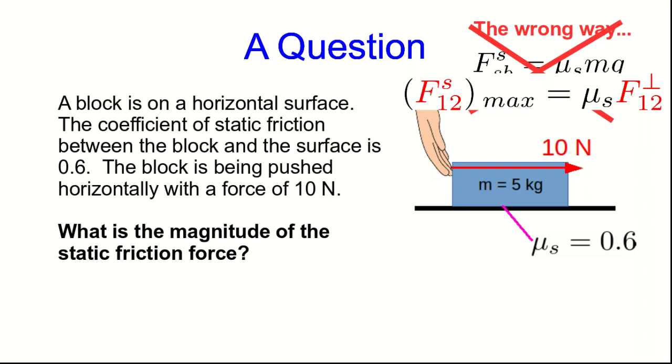So the correct way to do it is to realize that the block isn't sliding, its acceleration is zero, and so the vector sum of forces must be zero. The static friction must be exactly cancelling the 10 newton force that you're exerting to the right. It must be 10 newtons to the left.